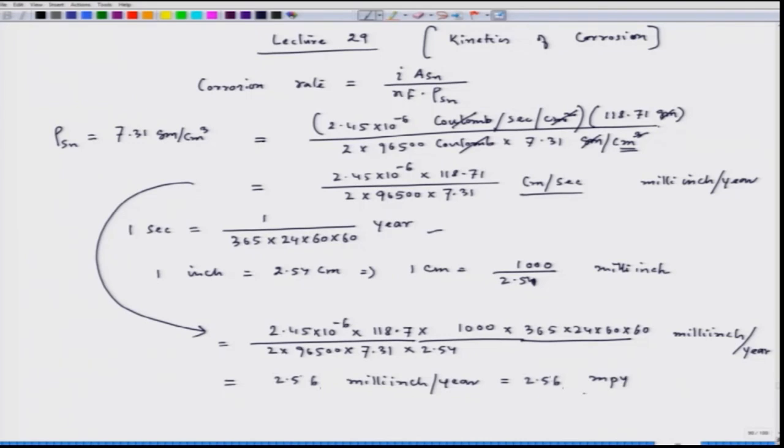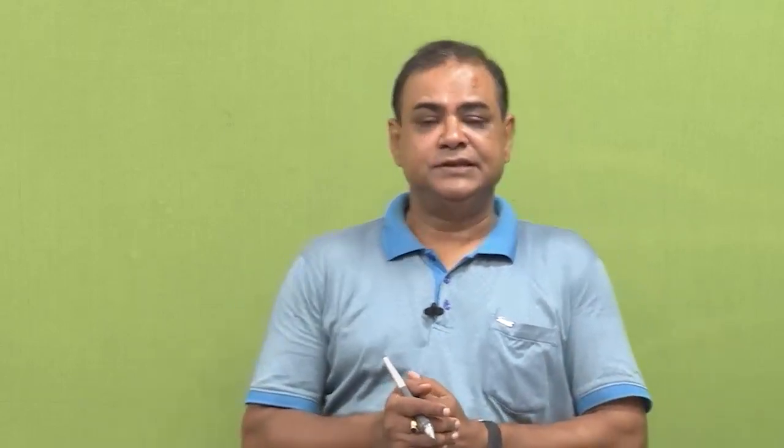We can express the corrosion rate using the corrosion current density and convert it into either MDD — that is, weight loss per area per unit time — or MPY, which is milli-inch per year. We can express it as uniform or localized corrosion depending on the surface nature of the metal in that particular corrosive environment. Now let us go a little deeper into the current density.